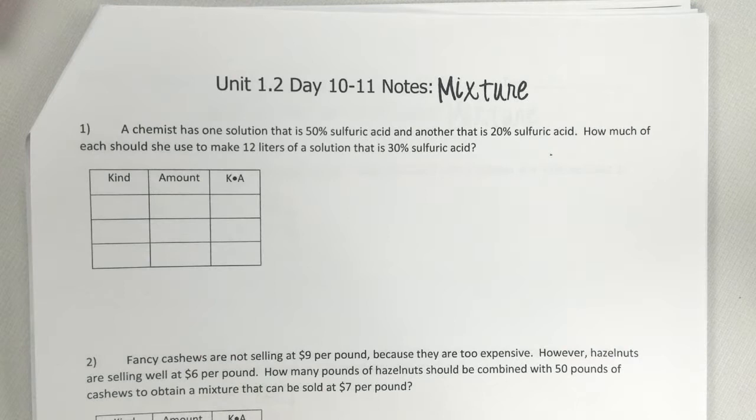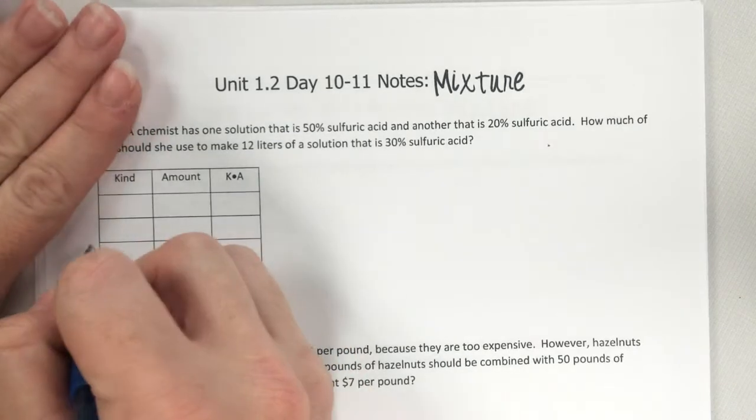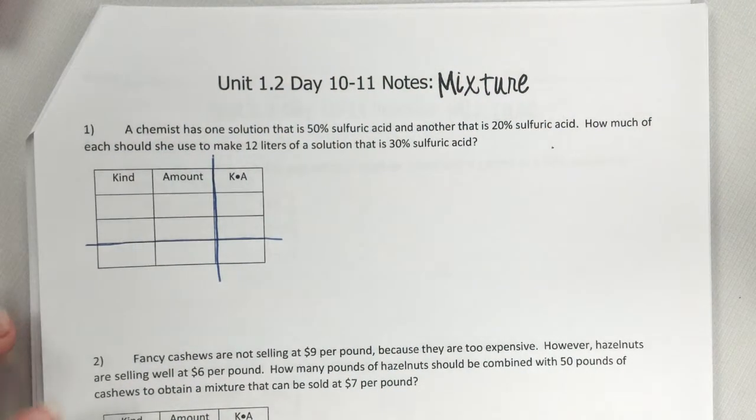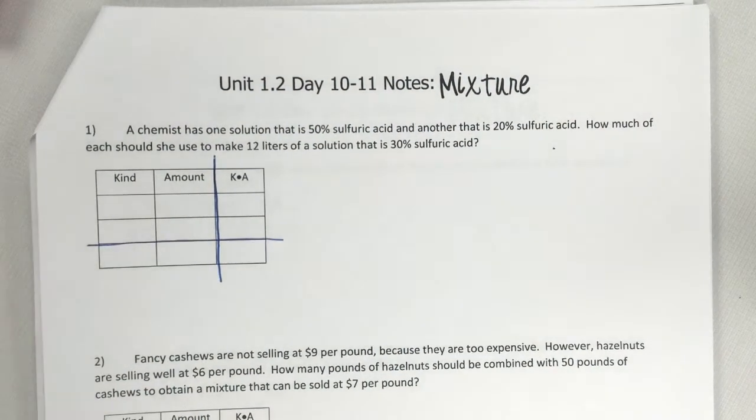Okay, so we are starting mixture. I think mixture is easier. I think motion is the hardest out of this unit. Then I think investment is the second hardest and mixture is the easiest. It's because there's no, you know with motion you could set it up this way but you could also set it up this way, but that's not here. There's no question on how you set it up. It's always going to be the same.